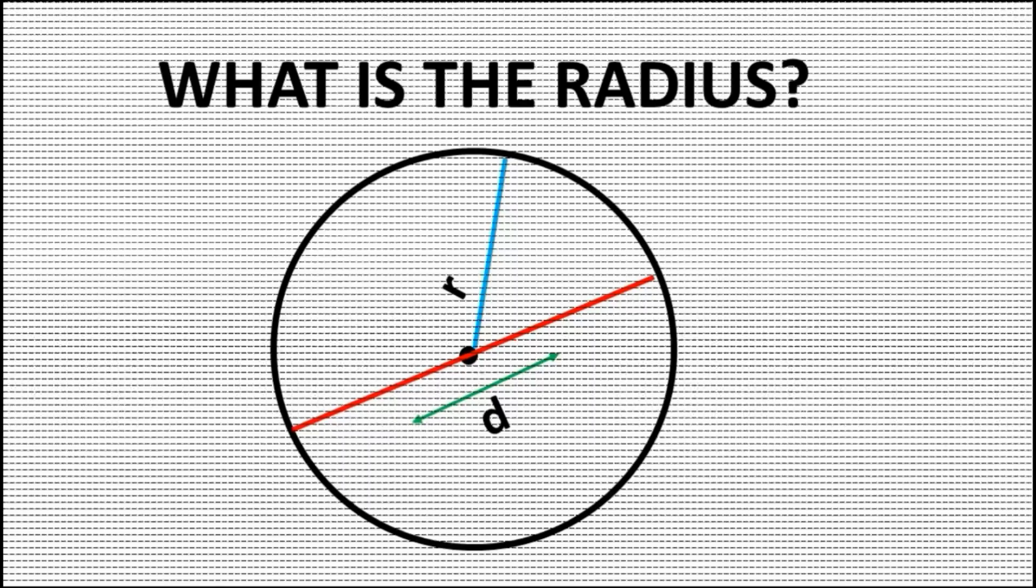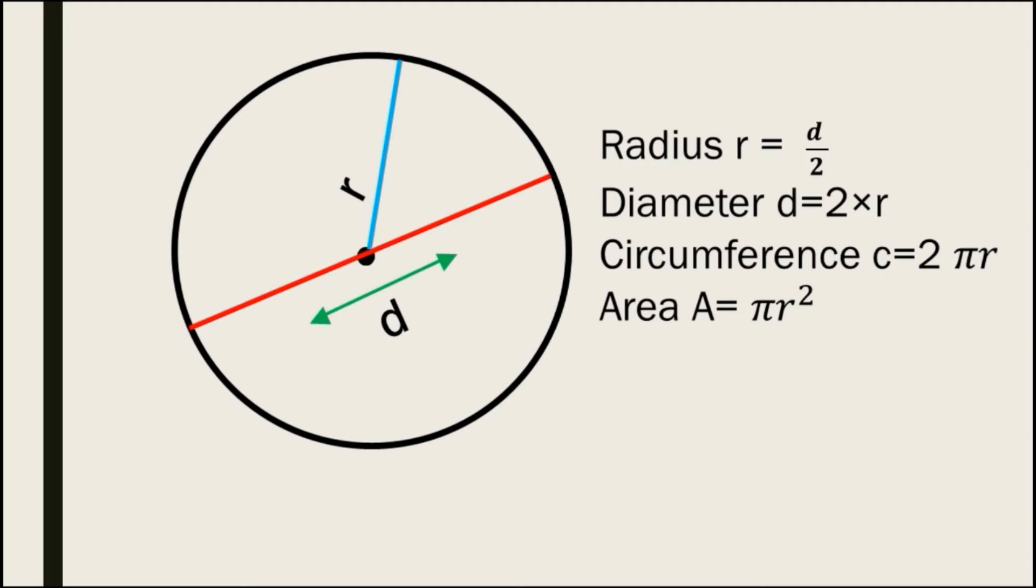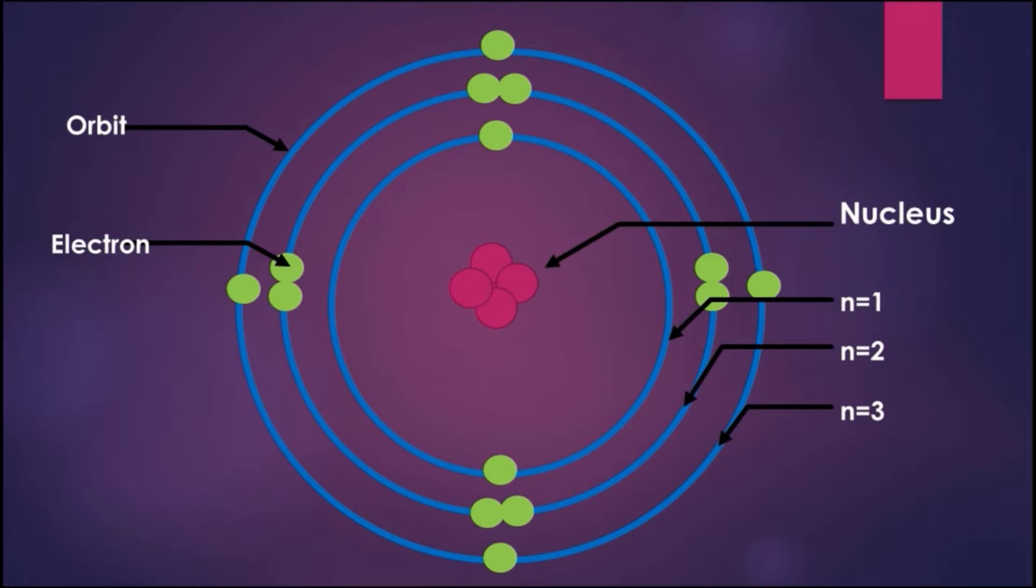In the circle, the radius has the same length everywhere. It is half of the diameter, and because of that, we can find the circumference and area of the circle. In a similar way, we define the total distance from the atom's nucleus to the outermost orbitals of electrons.